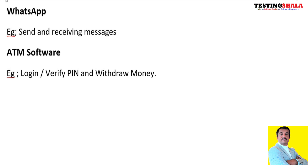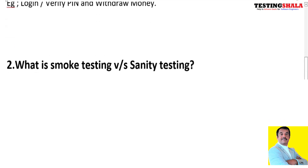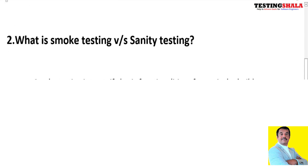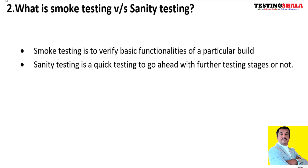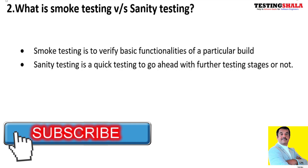The next question is: what is smoke testing versus sanity testing? Smoke testing, as we discussed, is the initial part of testing to verify that critical functionalities are working in a particular build. Sanity testing is another form where we check a particular functionality to see whether we can take it for further testing on certain functionalities or proceed to further testing stages.